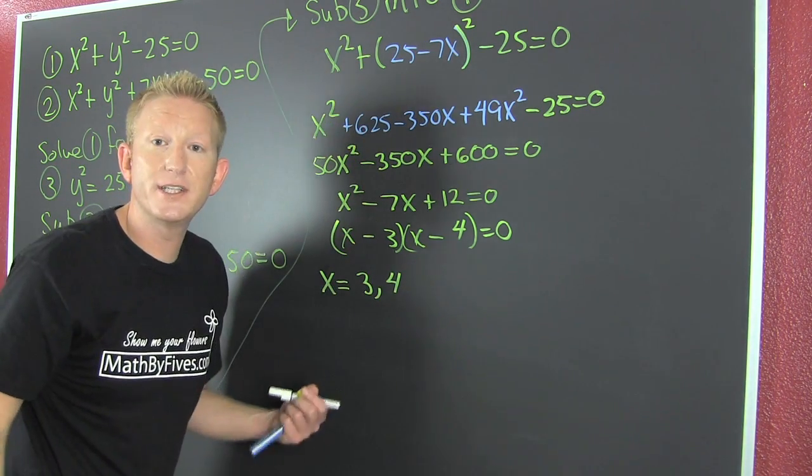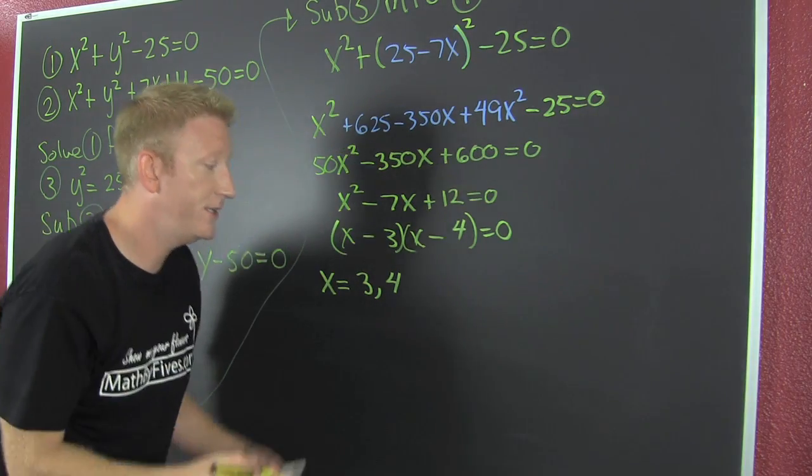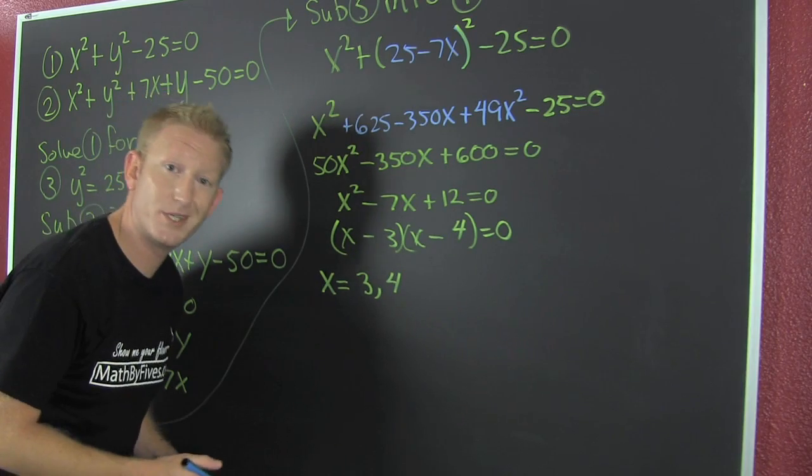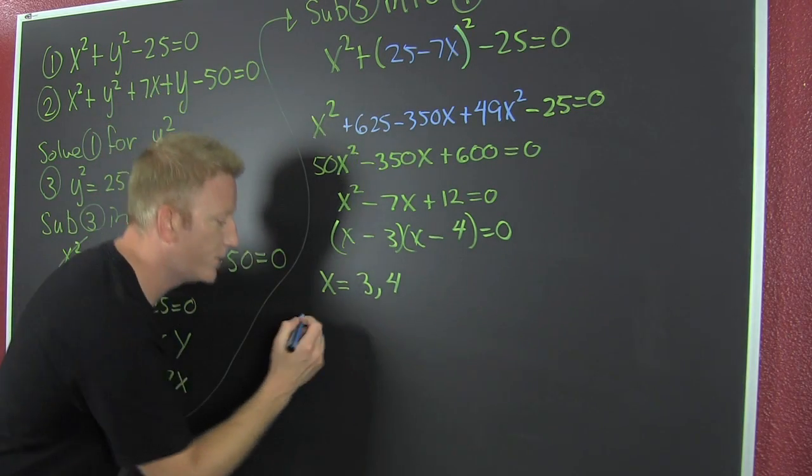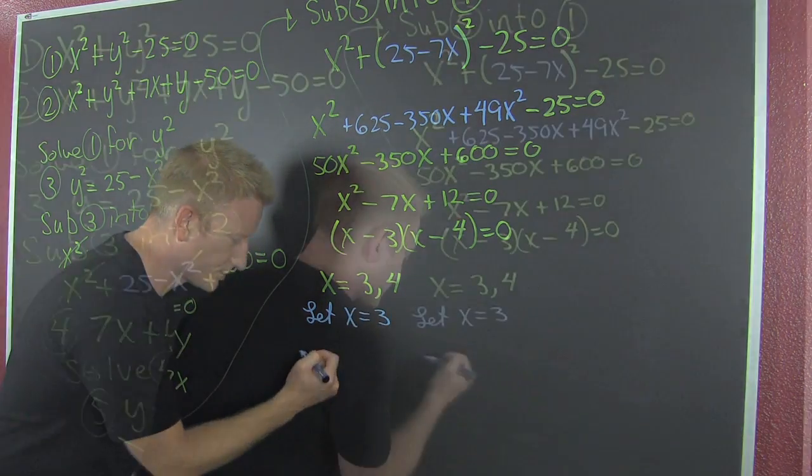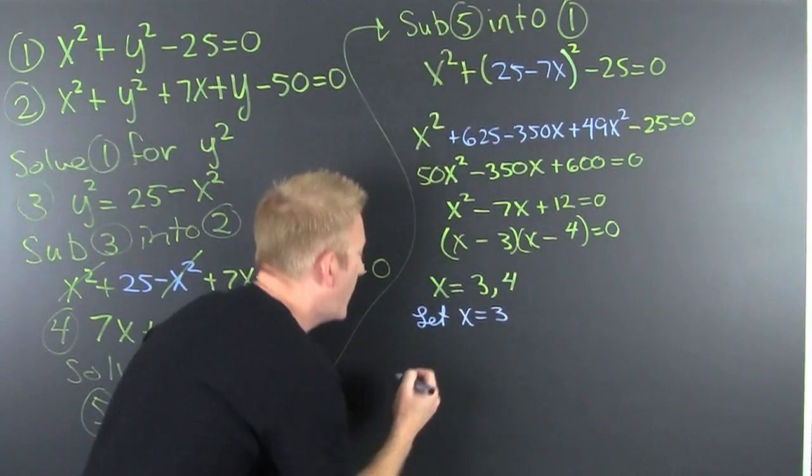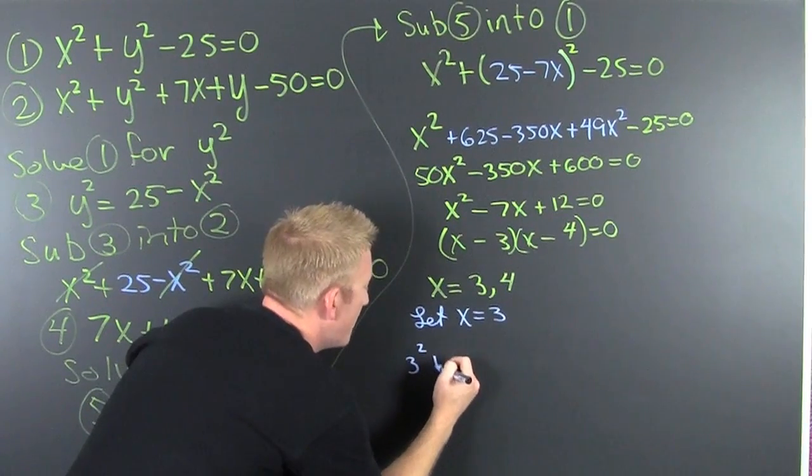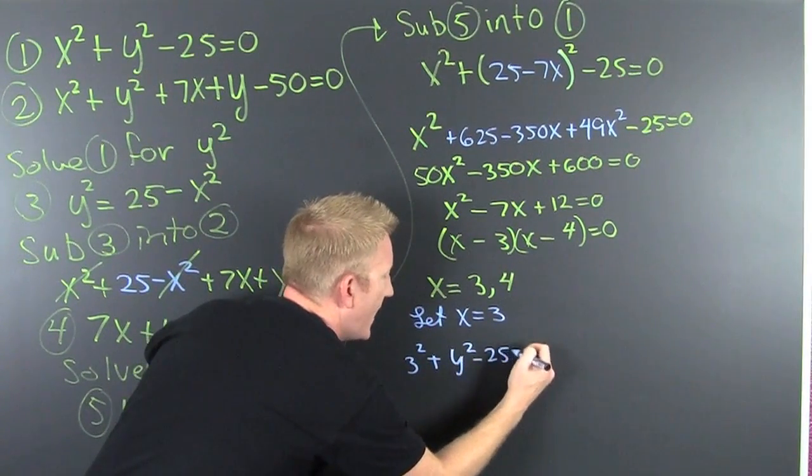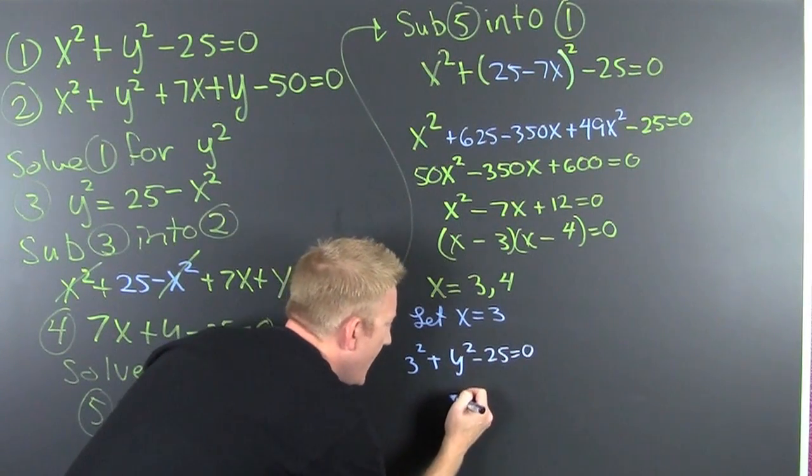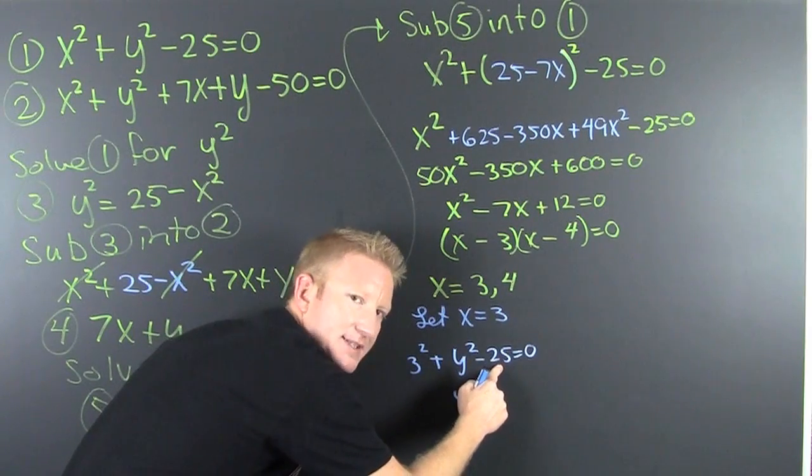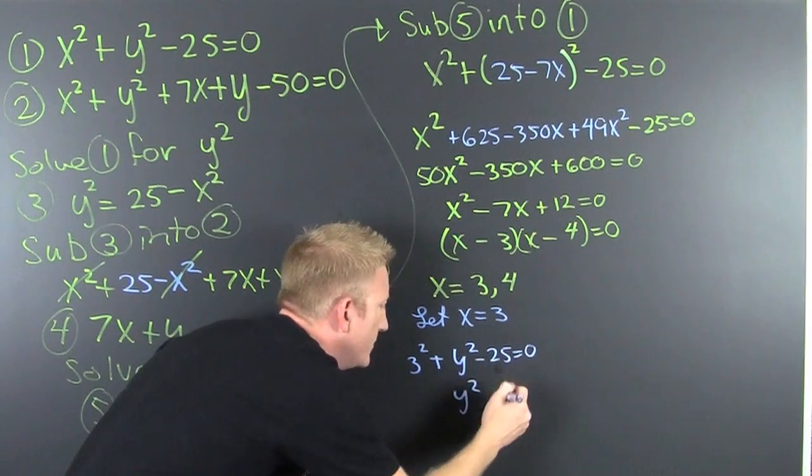I'm gonna take those and put them into one of the originals. Might as well be equation 1 because it's a tighter one. So if we let x equal 3, then we are gonna get 3 squared plus y squared minus 25 equals 0. And y squared, this is 9, 9 minus 25 is minus 16, and minus 16 when I move it to the other side is 16.